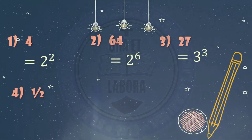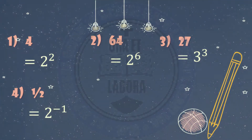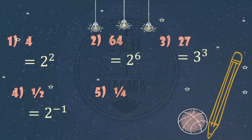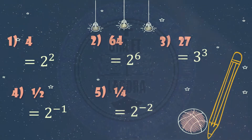Number 4: 1 half — the answer is 2 raised to negative 1. And lastly, 1 fourth — the answer is 2 raised to negative 2.